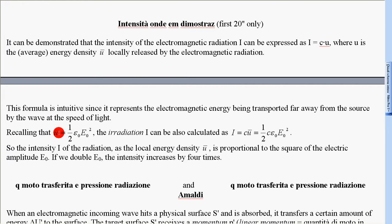Recalling that U equal to 1 half epsilon zero E zero square, the irradiation I can also be calculated as I equal to C U equal to 1 half C epsilon zero E zero square.